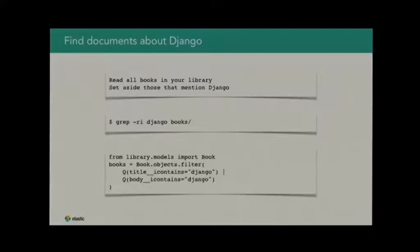If you want to search for Django in your database models, again super simple — just do a query set with iContains, and Django will do that for you. It will go to the database, read every single model in that table, read all the data, and look for Django in there. Obviously, this is not a way to go. It doesn't scale, and more importantly, it doesn't really work.